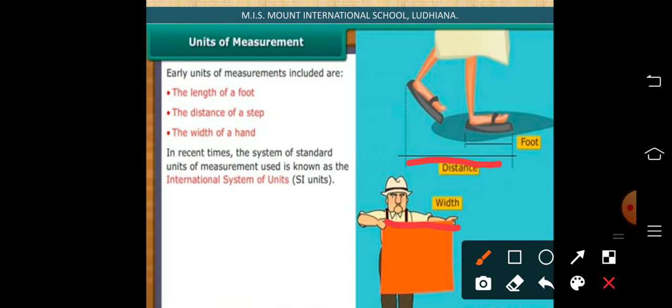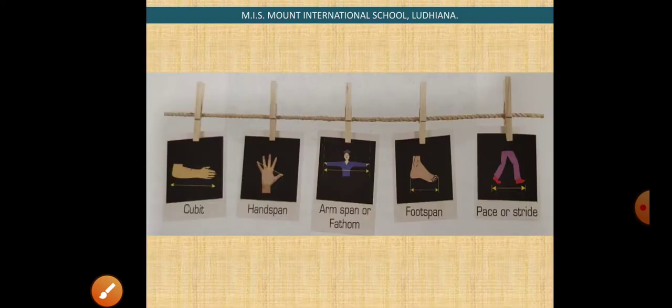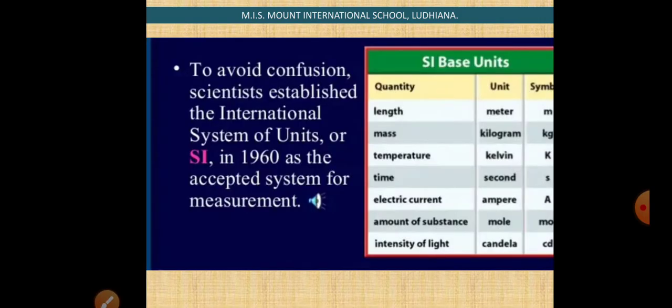For example, if a person is longer in length, then his hand span and width will be more. So if a person is tall, he will cover more distance compared to a person who is short. To avoid confusion, scientists established an international system of units, the SI units, in 1960.